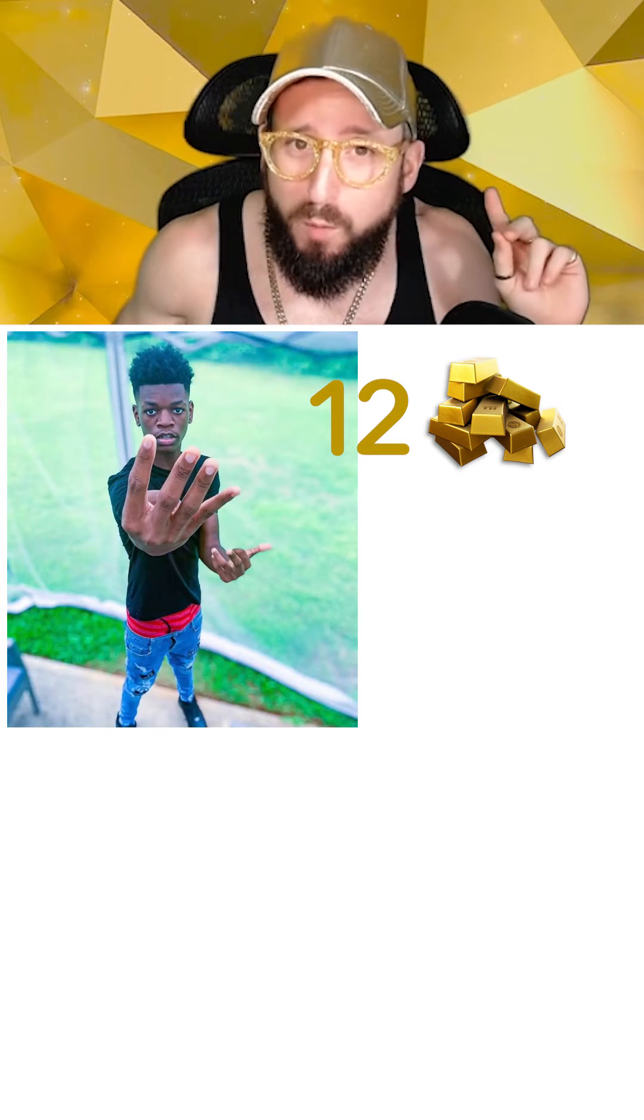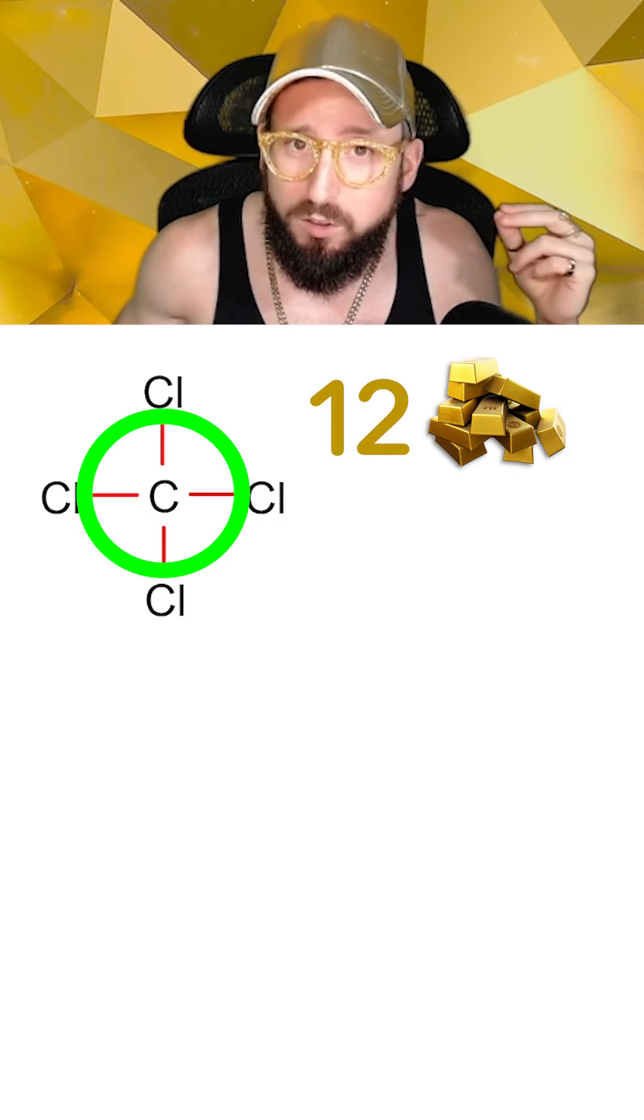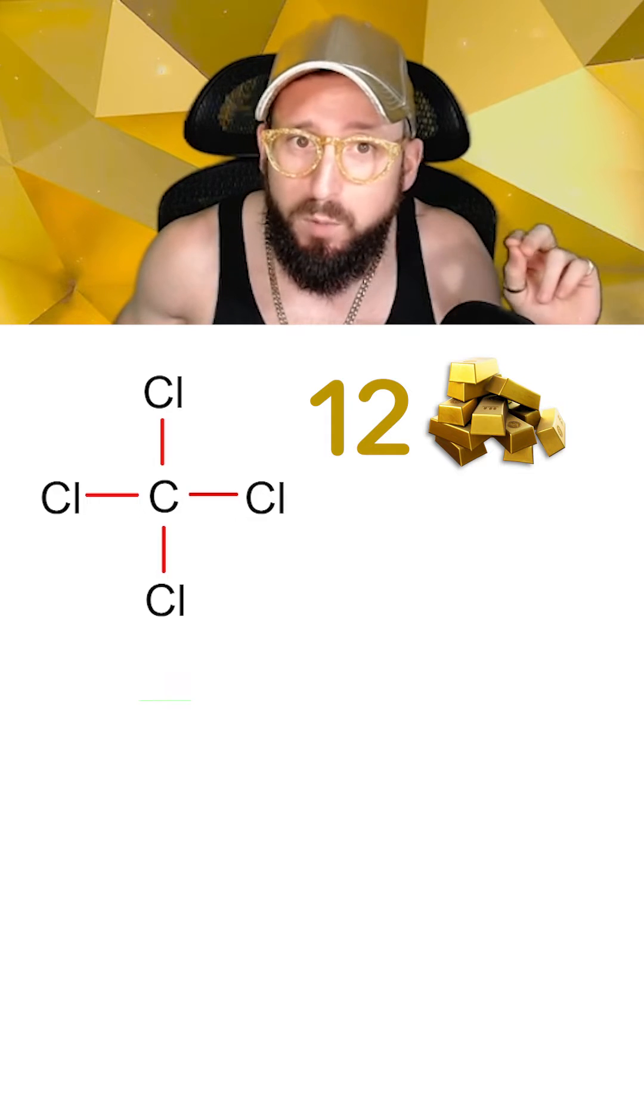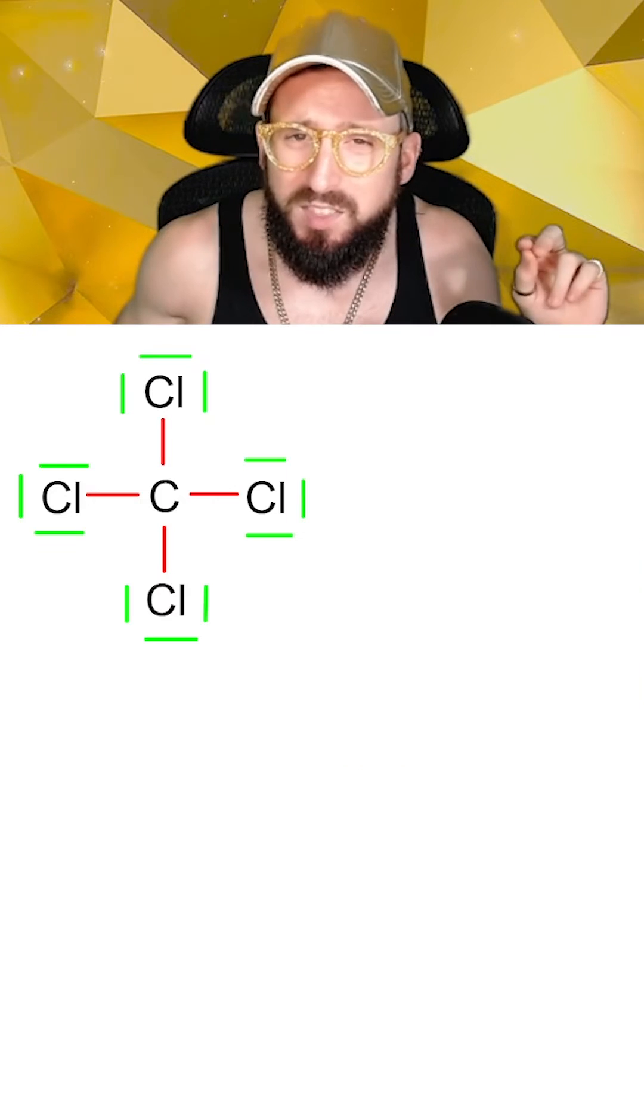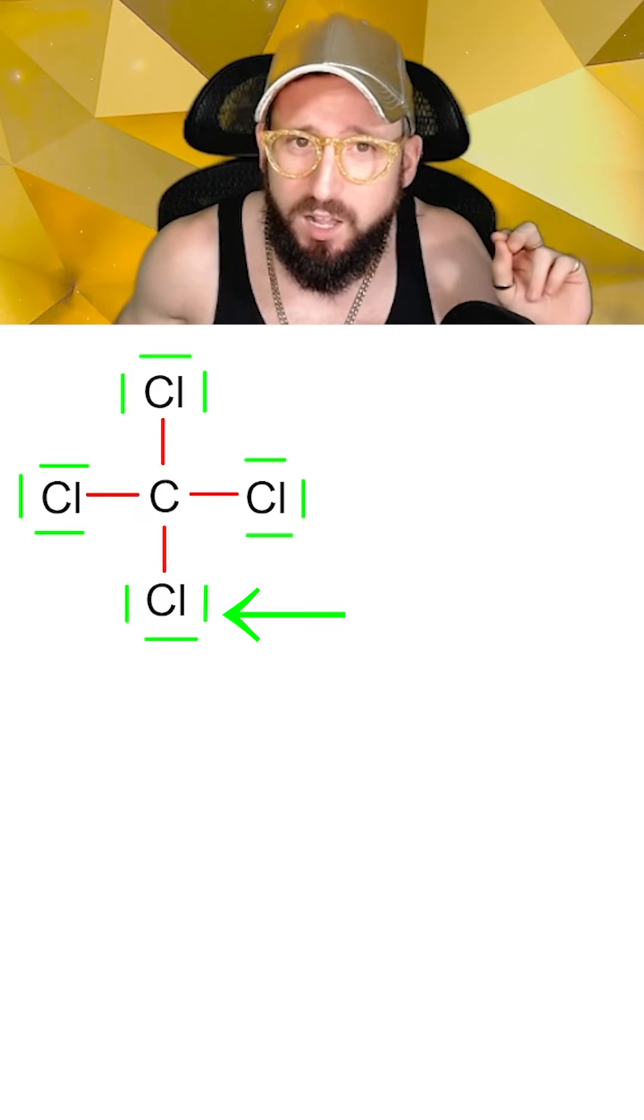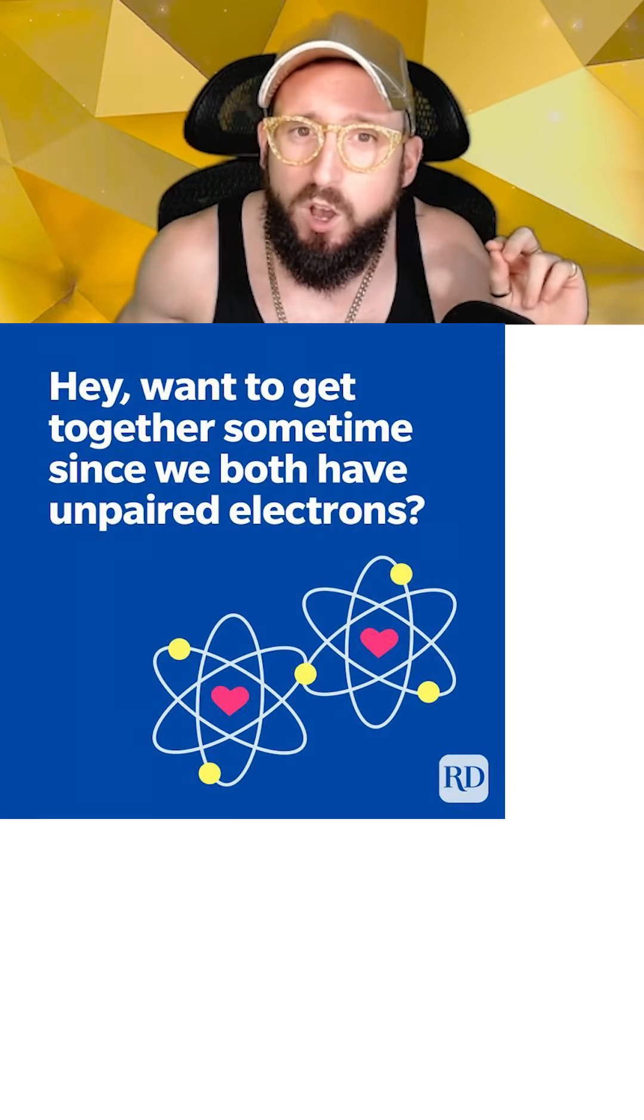In general, every atom wants to have four bars touching it, so while the carbon already has four, we're going to have to place the remaining bars around the chlorines so that they each also have four. Now we've used up all the bars, so we're done. The last step is to replace the bars that don't connect elements together with two dots. These are what we call unpaired electrons.